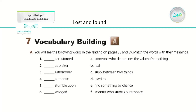Now let's revise them together. The first word is accustomed — when you do something regularly, that means you are accustomed to it, so it also means used to. Number two, appraiser: if you have something like a golden medal and you want to know how much it is worth, you take it to an appraiser. Number three, astronomer is a person who is interested in outer space. Number four, authentic is something real, something that doesn't have any copies or other versions. Number five, stumble upon means finding something by accident. And the last word, wedged, means something that is stuck between two things.